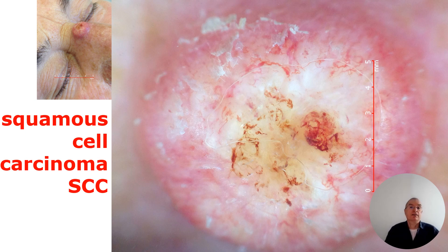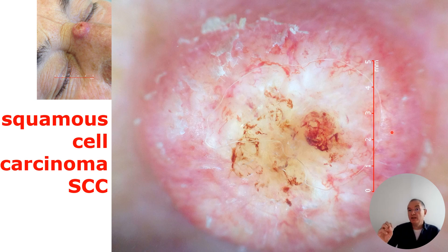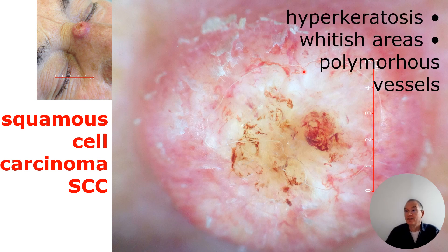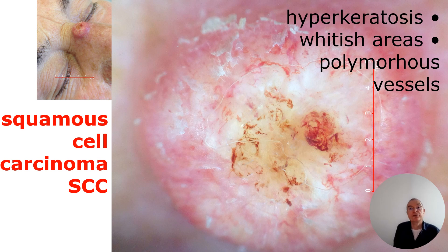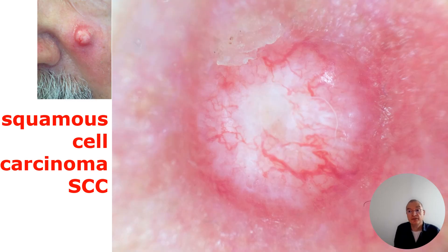Here it is simpler. You see this firm tumor with these whitish areas. Remember: whitish means a kerato-producing tumor, with a polymorphia of vessels at the periphery, perhaps a little bit of hyperkeratosis or scratching. But we need to do surgery here, and the SCC was confirmed in histopathology.